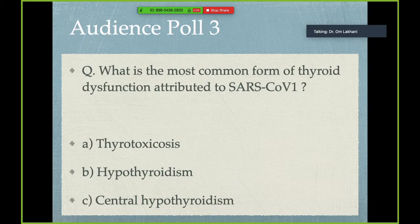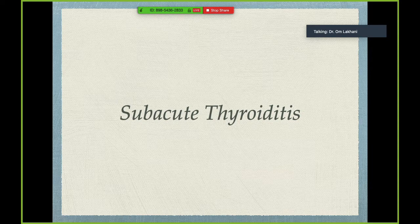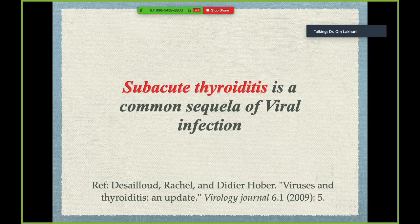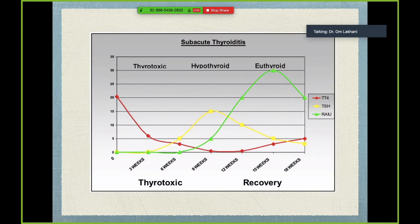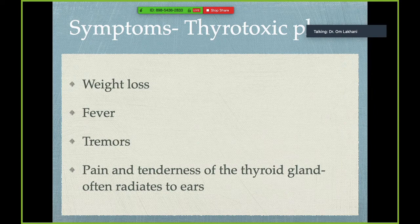An important disease to expect is subacute thyroiditis — we haven't seen many cases due to COVID-19 yet, but we may in the future. Subacute thyroiditis is a common sequelae to viral infections. We are already seeing some reports from across India of thyroid function tests suggestive of subacute thyroiditis. Subacute thyroiditis has a triphasic course: initially a thyrotoxic phase, followed by a brief hypothyroid phase, followed in most cases by a euthyroid state.